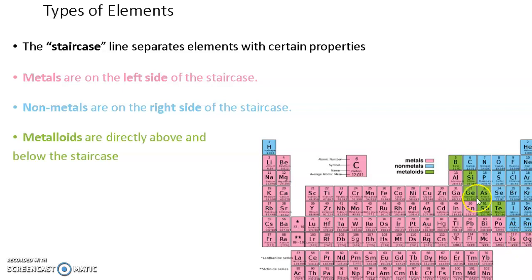If you can see right here, metals are on the left side of the staircase, all of them are colored in pink. Non-metals are on the right side of the staircase, in blue. And metalloids are directly above and below the staircase.